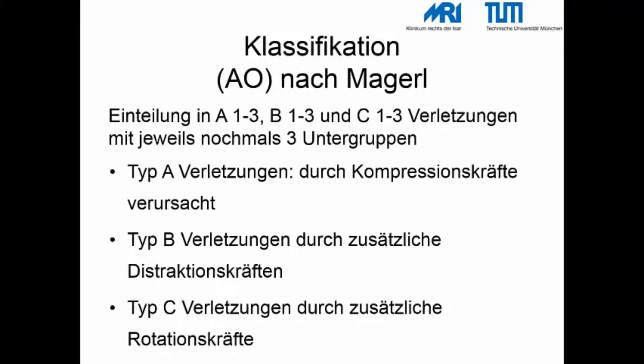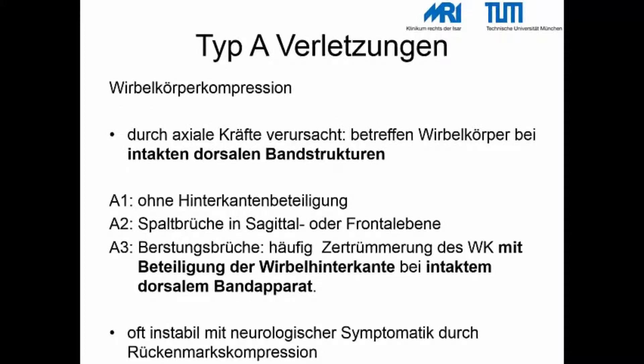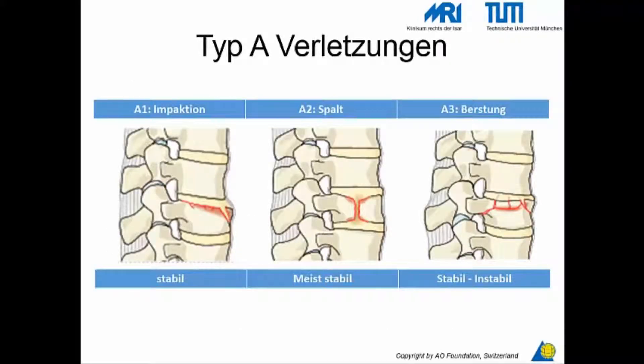Zur Identifikation der optimalen Therapie hat sich die Klassifikation nach Magerl bewährt. Diese berücksichtigt den primären Verletzungsmechanismus. Typ A Verletzungen sind Kompressionsverletzungen. Bei Typ B treten Kompressions-Distraktionskräfte auf, und Typ C Verletzungen sind von zusätzlichen Rotationsbewegungen betroffen. Typ A Verletzungen sind gekennzeichnet durch axiale Kräfte bei intakten dorsalen Bandstrukturen: A1 ohne Hinterkantenbeteiligung, A2 Spaltbrüche in Sagittal- oder Frontalebene, A3 Berstungsbrüche mit Zertrümmerung des Wirbelkörpers.